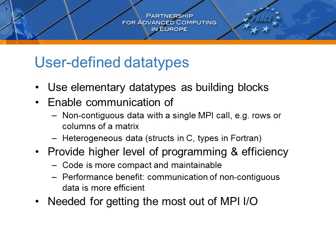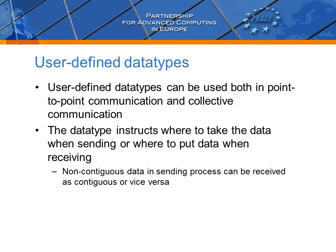The need for defining user-defined data types becomes very pronounced when using MPI-IO for disk access of non-contiguous data. We can employ user-defined data types in all routines that require a data type argument. The argument does not have to be the same in both sending and receiving routines — you are allowed to receive non-contiguous data described by a user-defined data type into a contiguous block consisting of an appropriate elementary data type, or vice versa.